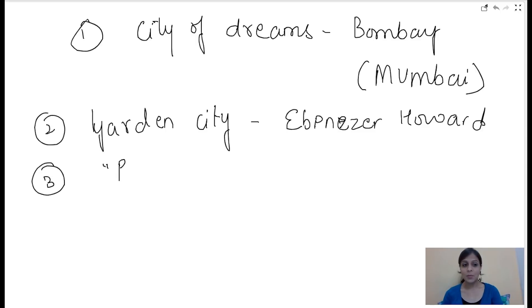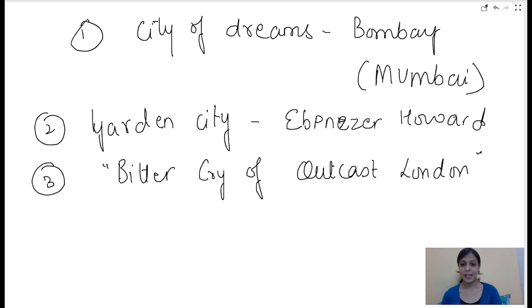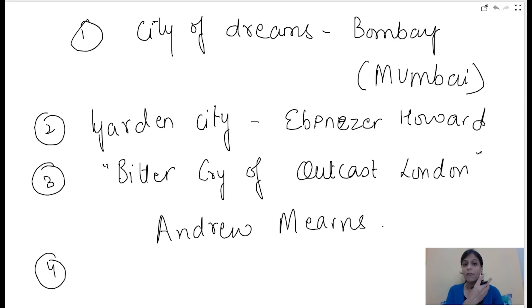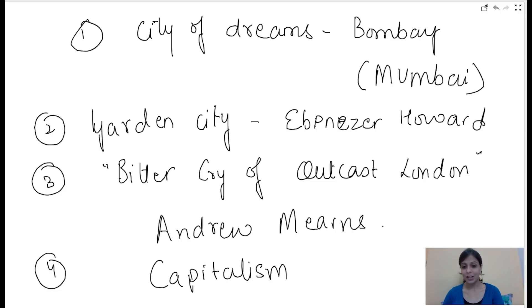Next: who wrote the book 'The Bitter Cry of Outcast London'? The answer is Andrew. And can you name one factor that changed modern industry, especially related to exploitation of colonial people? Yes, it is capitalism — this factor has greatly changed the form of organizations in many modern world countries.